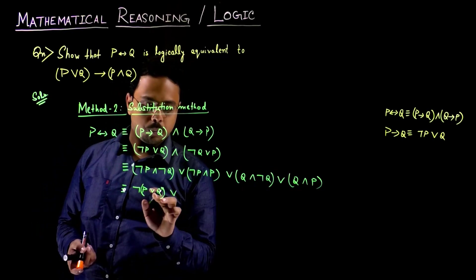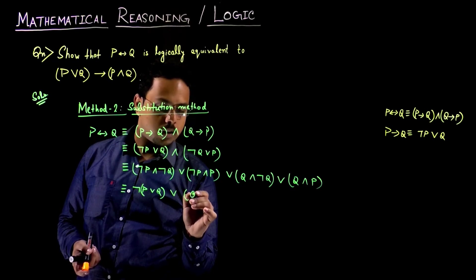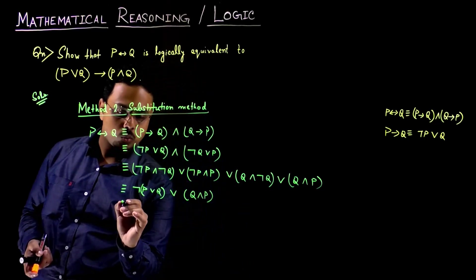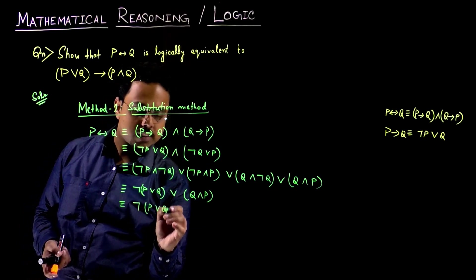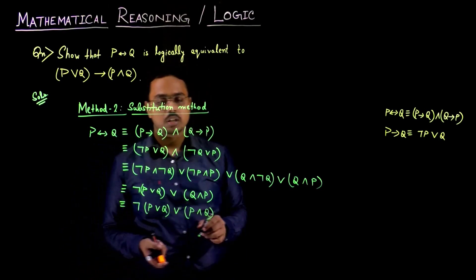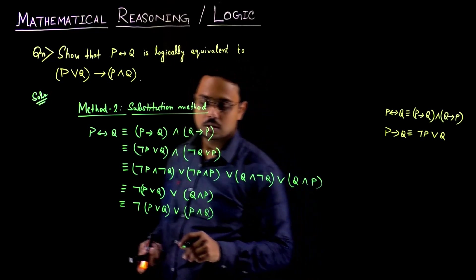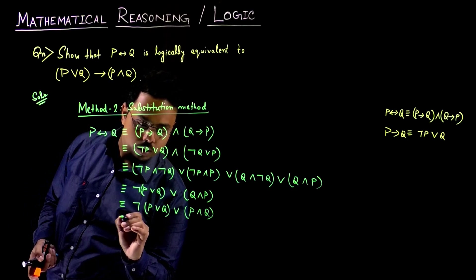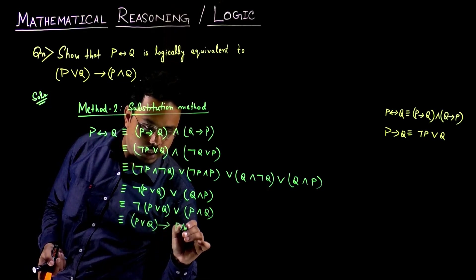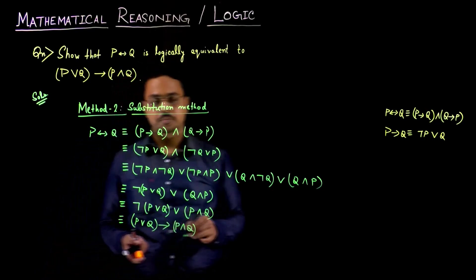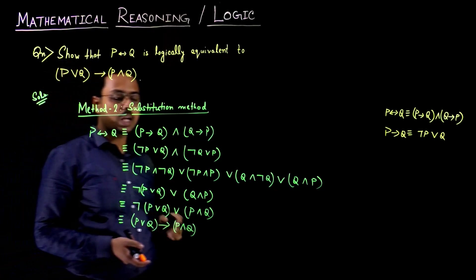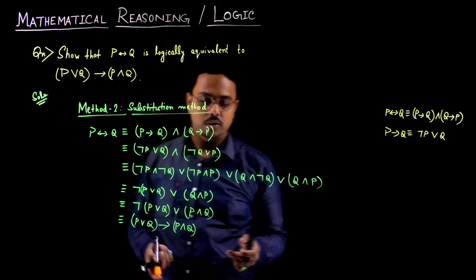NOT P AND P and Q AND NOT Q are contradictions — negation of the same element using the AND operation — so they simplify to false. We are left with NOT P OR Q OR Q AND P. This Q AND P can again be written as P AND Q by the commutative rule. Finally we get P OR Q implies P AND Q, which was our task to prove. We started from P↔Q and reached P OR Q implies P AND Q. Our result is shown.